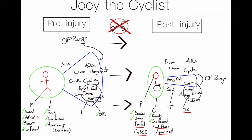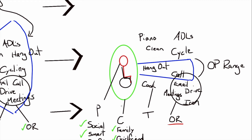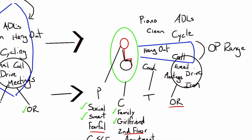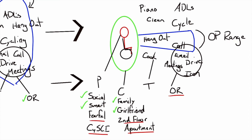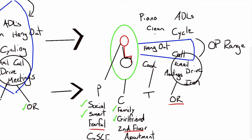Now let's look at Joey after his cycling accident where he experiences a C4 spinal cord injury. The context has shrunk around the person. Joey is still social and smart, but now is fearful and has motor and potentially sensory deficits. His second floor apartment is not conducive to his occupational performance range and helps to shrink it significantly. Piano is still out of his range, and now other things have fallen out too — cleaning, cycling, ADLs, cooking, and some work tasks. He might still be able to hang out to a limited degree or make calls with some assistance, but his occupational performance range is significantly diminished.